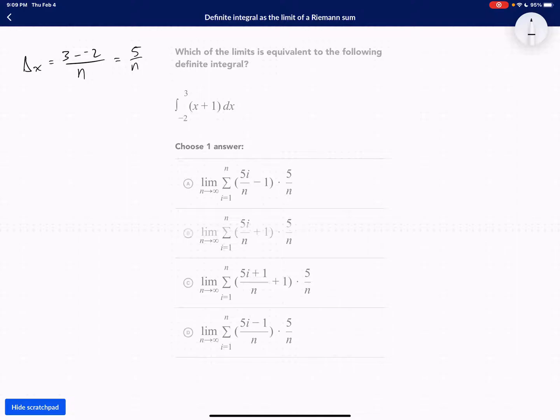Next, the f of x. What is the formula that we're finding the area under? What is the function that we're finding the area under? And in this case, it's always going to be what's inside the integral. The integrand. So it would be x plus 1.